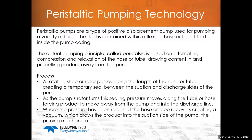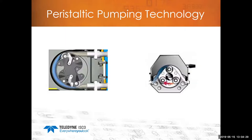Let's talk about the process to get a visual — the next slide will show pictures and an animation. A rotating shoe or roller rolls and squeezes the length of the hose or tube, creating a temporary seal between suction and discharge. As it lets go, the pressure moves along the tube, forcing the product away from the pump and pulling it into the discharge line. It's like a little ball squeezing the tube — very basic technology.